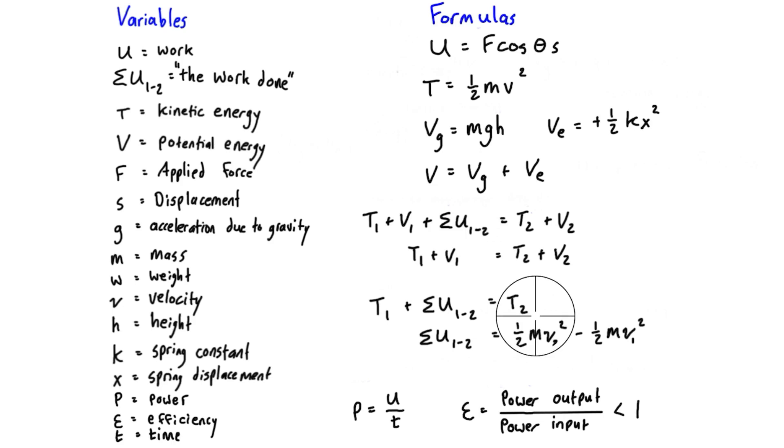You're going to use this one in the types of problems where the velocity is changing but the potential energy is staying the same. So that would be like a block sliding across a table horizontally and slowing down due to friction. The friction would do work on the block and then the kinetic energy in state two would be less.